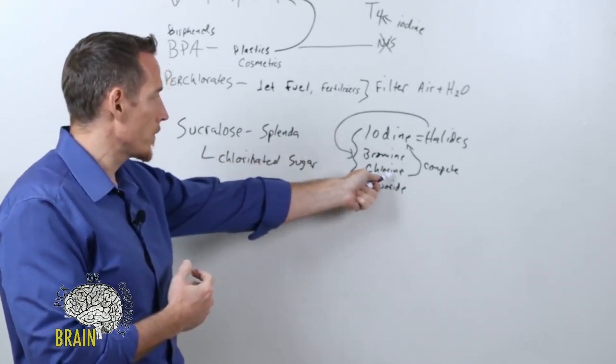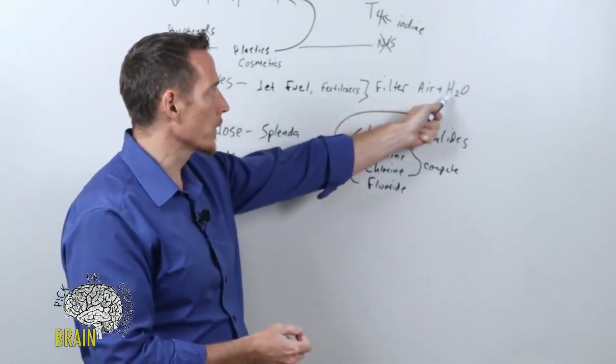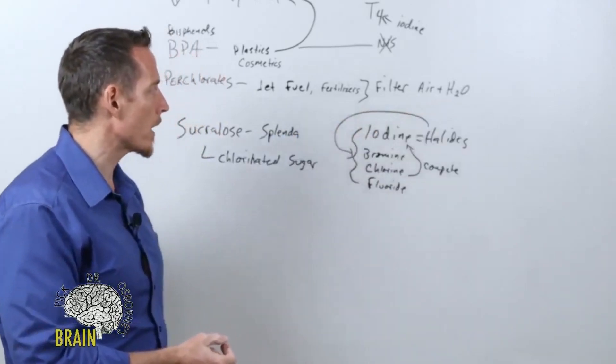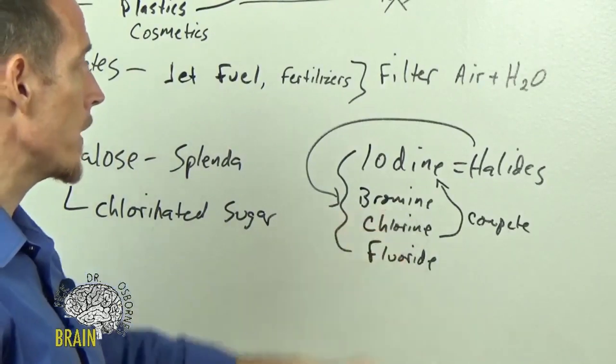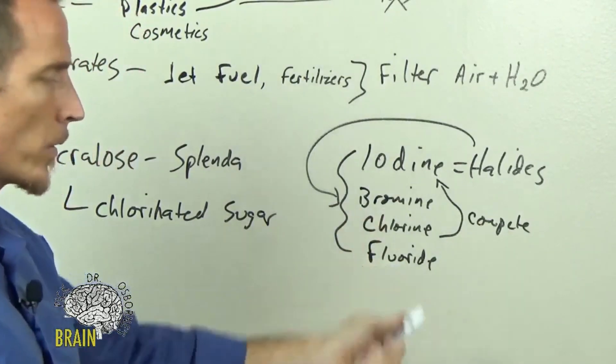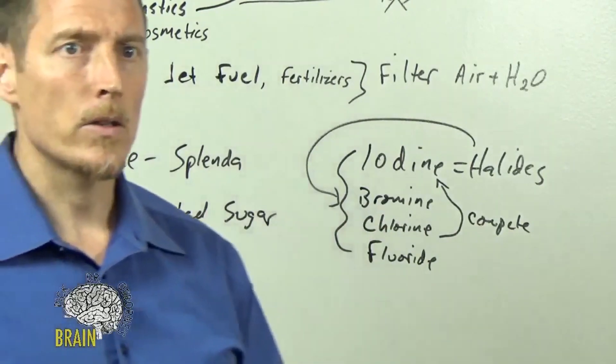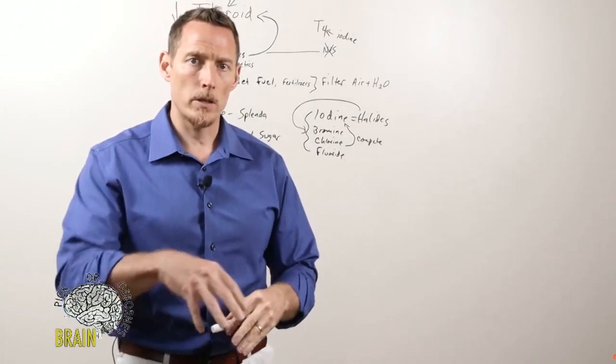Sucralose, Splenda, or chlorinated sugar—that's one of the reasons why it does that. We can get chlorine from drinking water, which goes back to what I said earlier: filter your water. Realize that chlorine is in your drinking water, and for many cities bromine is also in your drinking water. And guess what else is in your drinking water if you live in the city and the water is being fluoridated, especially in the United States—not so much in Europe.